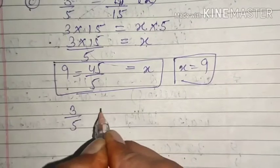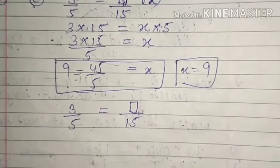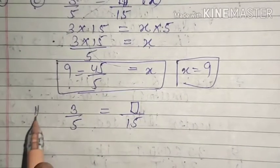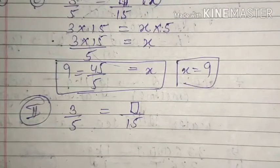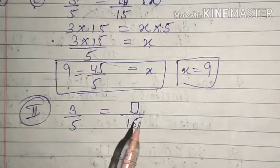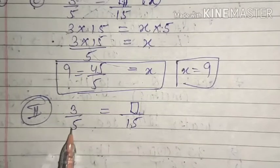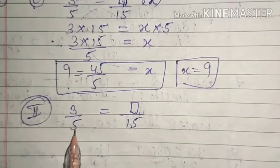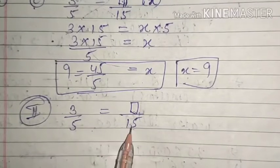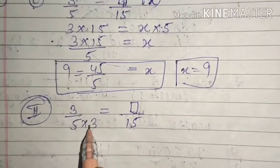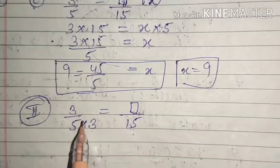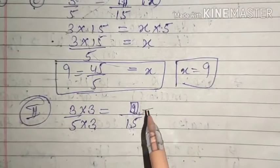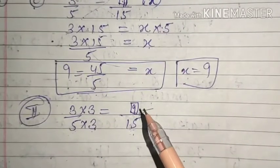The second method: 3 upon 5 equals dash upon 15. Since both are equivalent fractions, we can convert the smaller fraction into the larger one by multiplication. We have 5 in the denominator and need 15. We know 5 multiplied by 3 gives 15. If you multiply the denominator by 3, you must multiply the numerator by 3 as well. So 3 times 3 is 9. The answer is the same in both methods — use whichever you find easier.